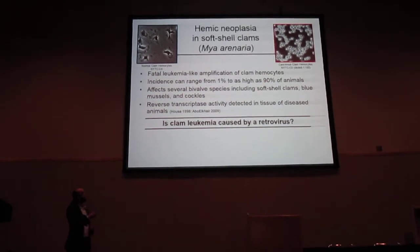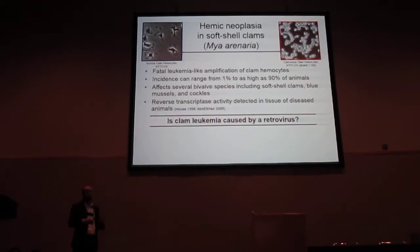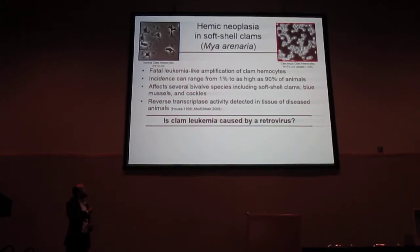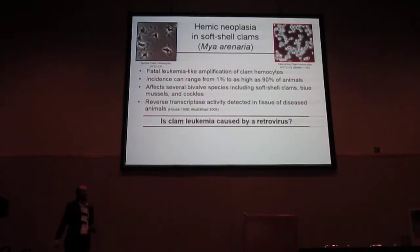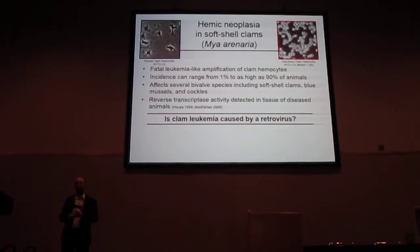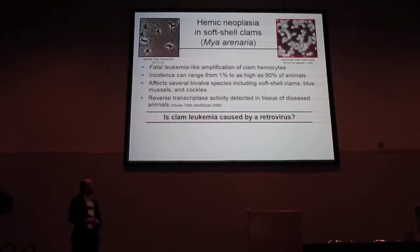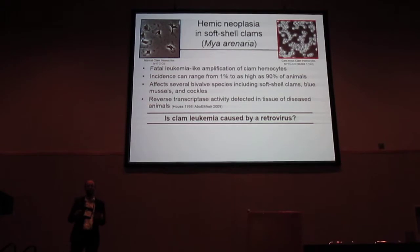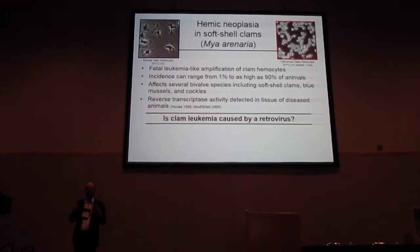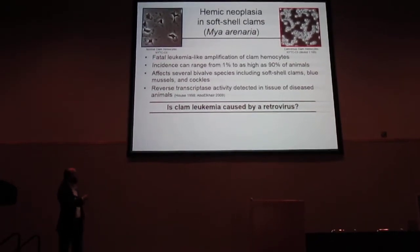There's actually a similar disease affecting multiple different bivalves — soft-shell clams, as well as mussels, cockles, and other species. What really got us interested was the description of reverse transcriptase activity detected in the tissues of these diseased animals. Reverse transcriptase is the hallmark enzyme of retroviruses, and so for a long time people thought there was a retrovirus causing this disease, but no one had been able to isolate or sequence a retrovirus as the actual cause.